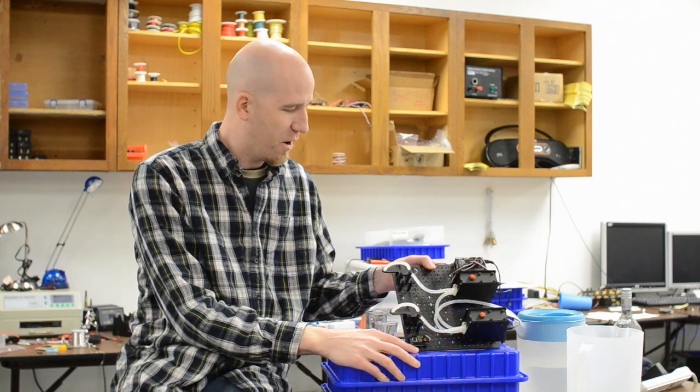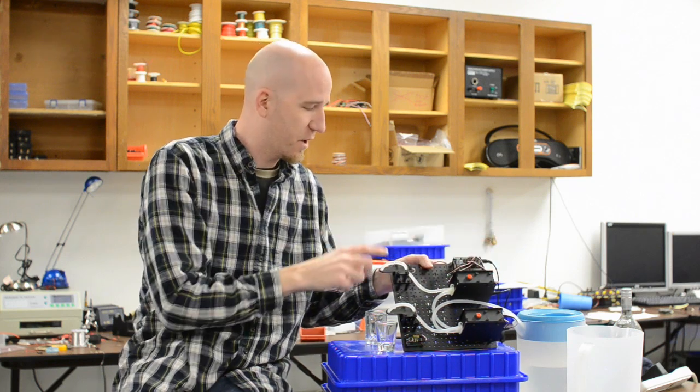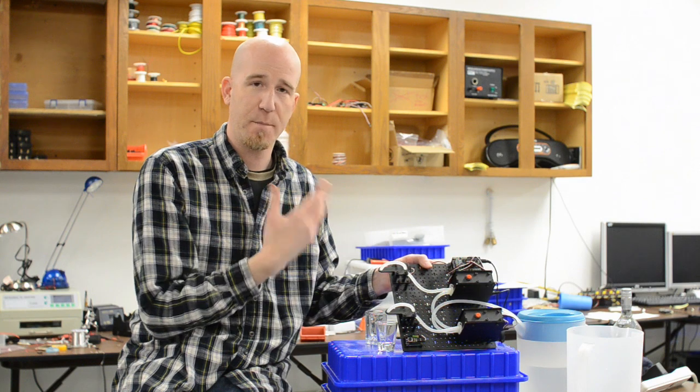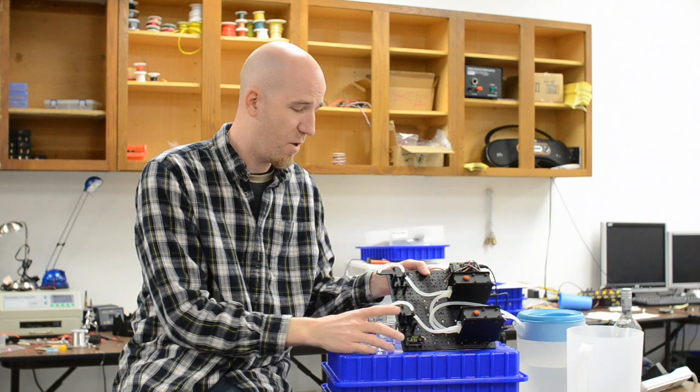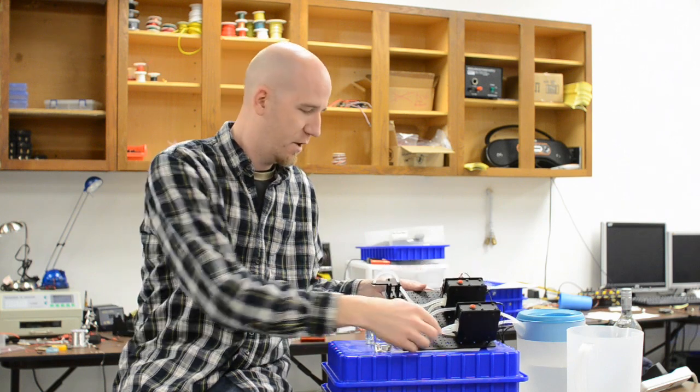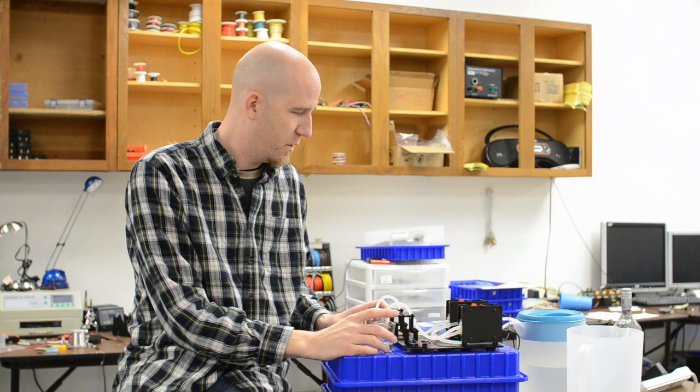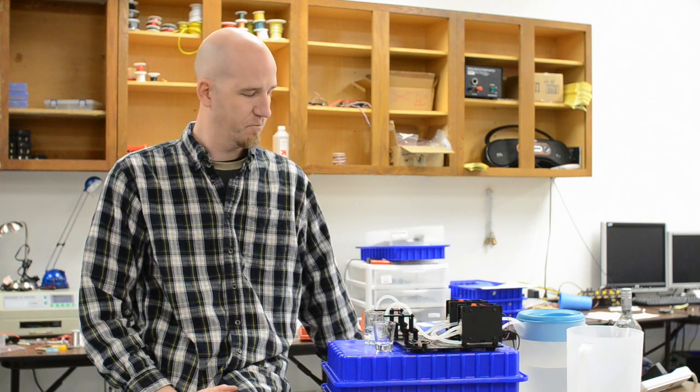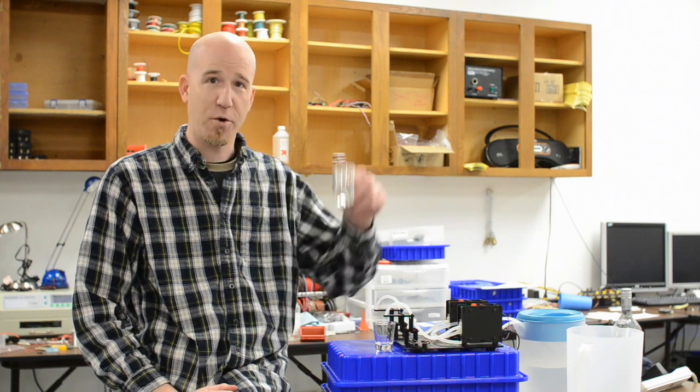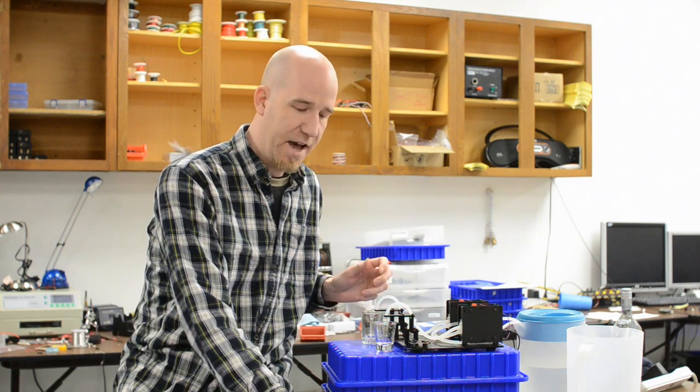The way this works is there's some code on the Geek Duino that's looking for when we push the button. When you hit the button, it basically turns on the relay inside the pumping station and runs the pump for X amount of seconds. I believe we have it set for something like two and a half seconds right now. So when I hit the button, you can see it pours me a shot of water. It's really as simple as that.